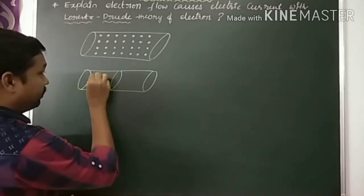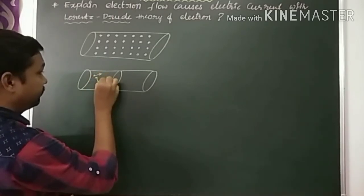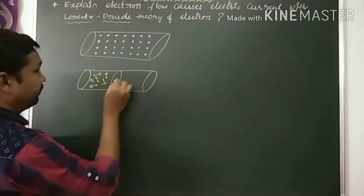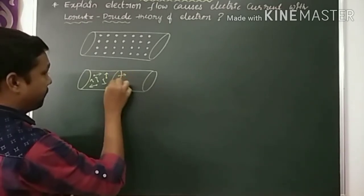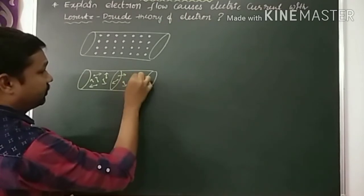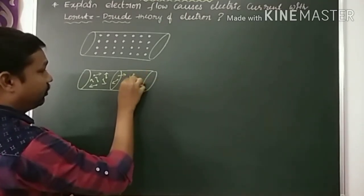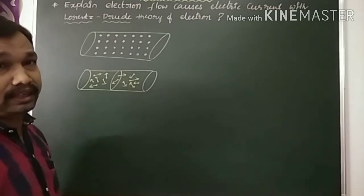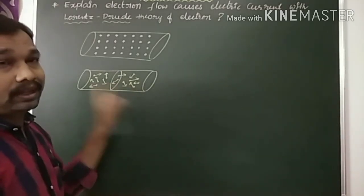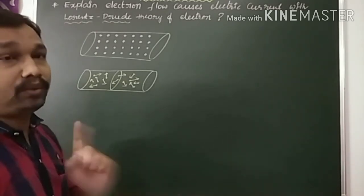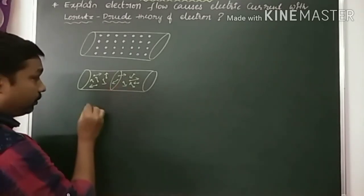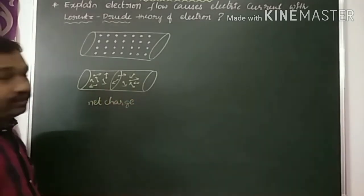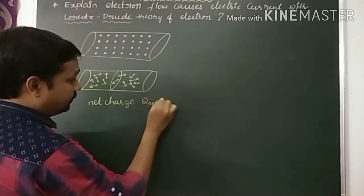The electrons move in different directions — there is no particular direction. All electrons are in random motion. The number of electrons crossing the cross-section from left to right in one second equals the number moving from right to left. Therefore, the net charge Q-net is equal to zero.